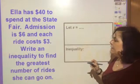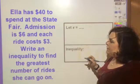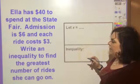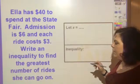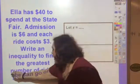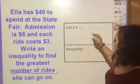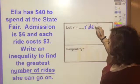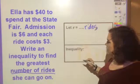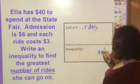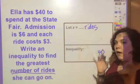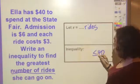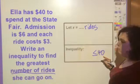Ella has $40 to spend at the state fair. Admission is six dollars and each ride costs three dollars. Write an inequality to find the greatest number of rides she can go on. So x is the number of rides. She has forty dollars — she cannot go above that, so that is the absolute most she can spend, but she can spend exactly 40.